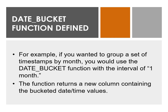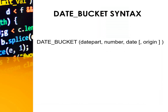Cool! The DateBucket function takes three arguments: the date part, the interval by which to group the data, and the date-time column to be grouped. An optional fourth argument is the origin, which is the beginning date.